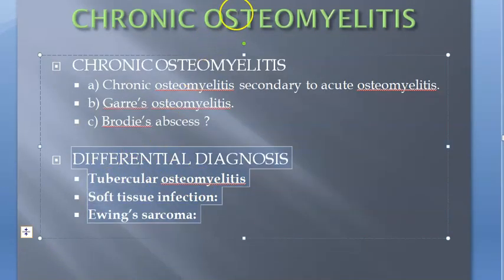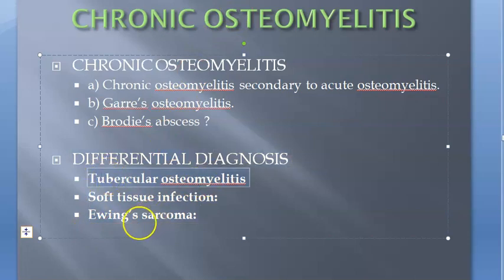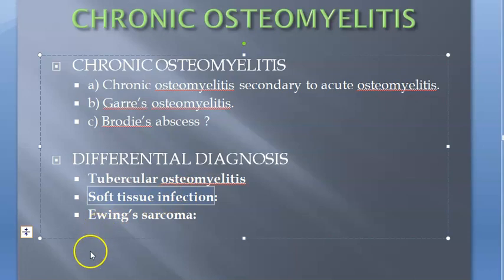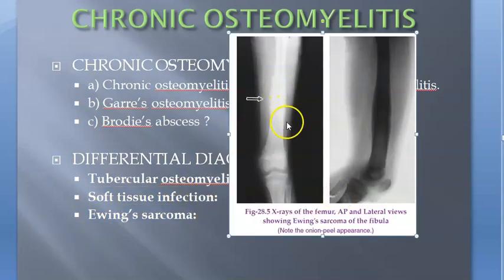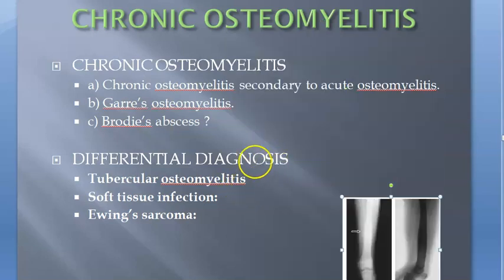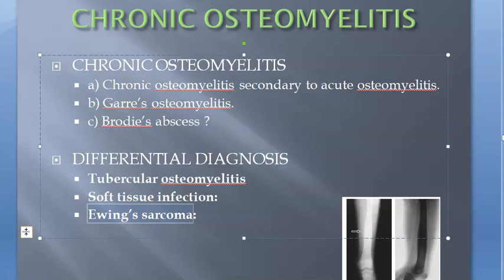For chronic osteomyelitis, it can be tubercular — caused by tuberculosis — or there may be some soft tissue infection. It could also be Ewing sarcoma. Here they show Ewing sarcoma of the fibula, affecting the diaphysis. It is a very aggressive tumor and can affect children as young as five years old. So in this video you have looked at the differential diagnosis of osteomyelitis.